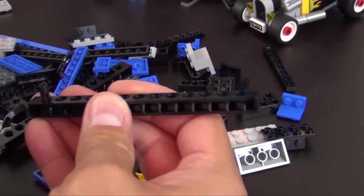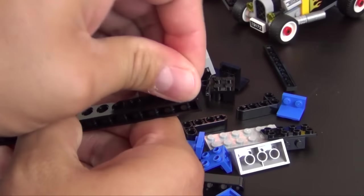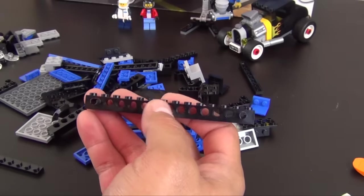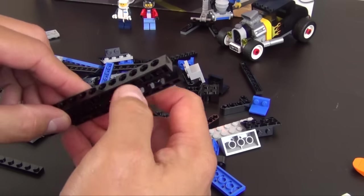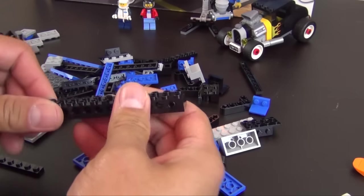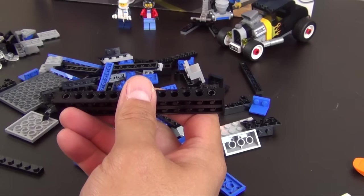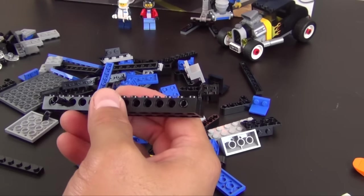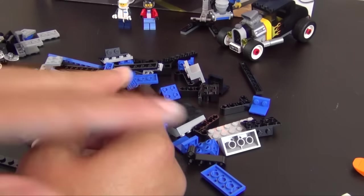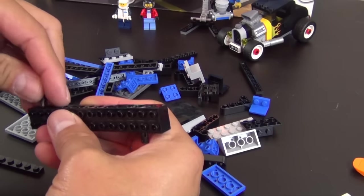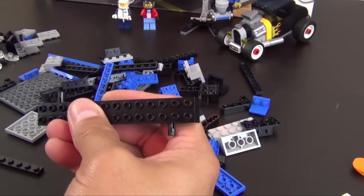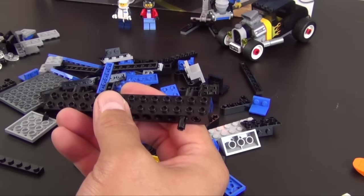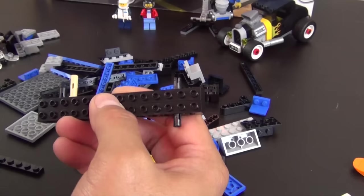We are going to begin with some technic pieces. We have a technic brick, couple friction pins that we are going to connect another technic brick to. Then we have more friction pins.